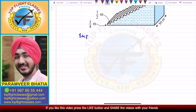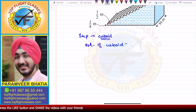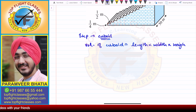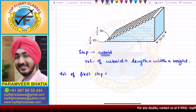So we have a terrace with 15 steps. The length of each step is 50 meters, the height of each step is 1/4 meters, and the width of each step is 1/2 meters. Each step is in the form of a cuboid, and the volume of a cuboid is equal to length × width × height. So the volume of the first step will be equal to the length, which is 50 meters.